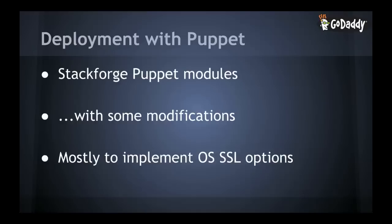My name is Mike Dorman. As Craig mentioned, we use a lot of the StackForge modules in Puppet to do all the deployments and configuration of all the OpenStack services. For the most part those work pretty well for us. There were a few modifications we had to do earlier on, mainly around supporting SSL options for each of the different services — we had a requirement to do SSL on as much as we could in OpenStack. For the most part, all that stuff has since been implemented in those modules by the community, so on almost every one of them you've got the SSL options now.